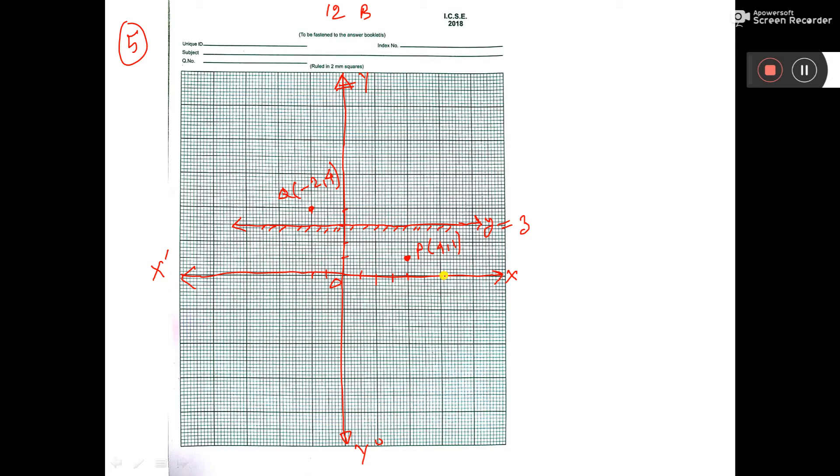Now find the coordinates of P'. These two points are reflected in this line. So P will go this side - 1, 2, 1, 2 - it will come here. This is P'. Now we have to find the coordinate of P'.